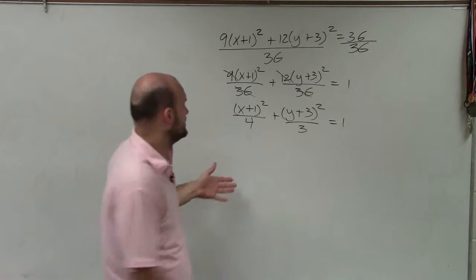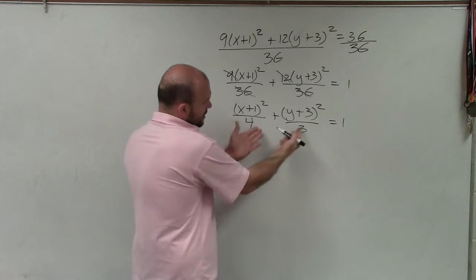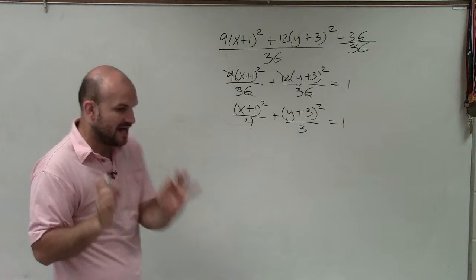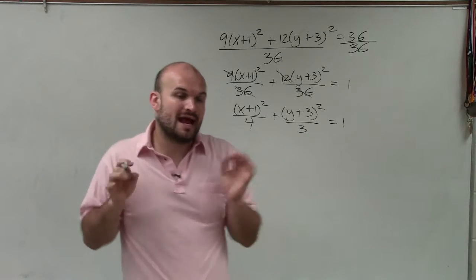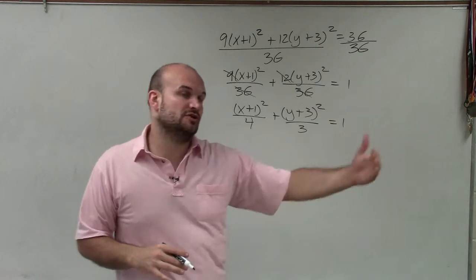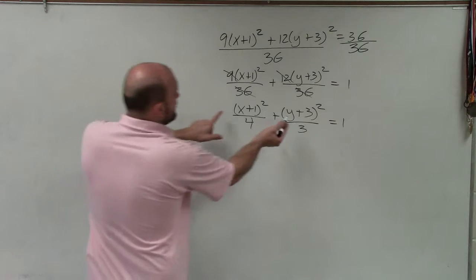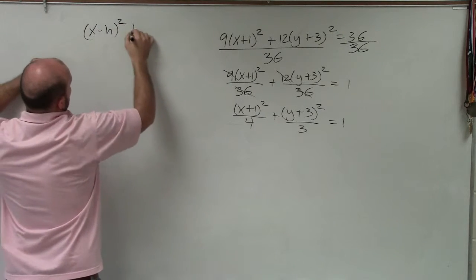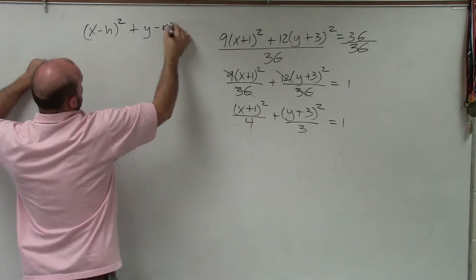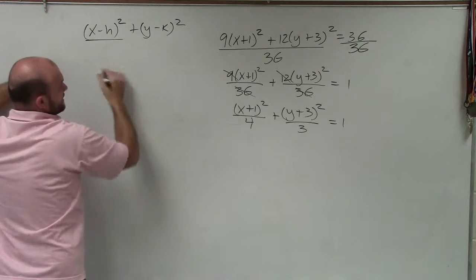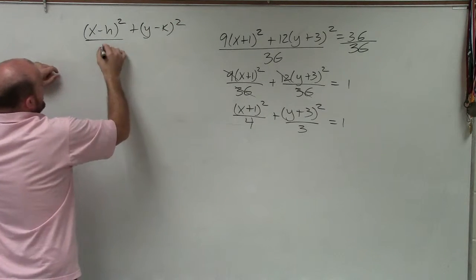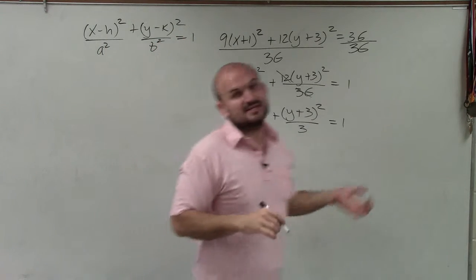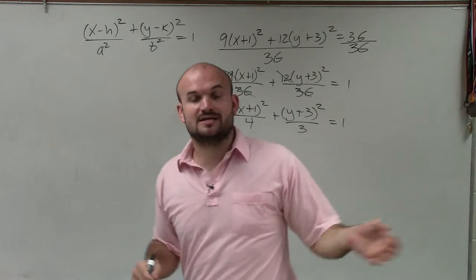So now we can determine that the larger number of our denominators is under the x². And that is going to be your value of a², where a represents the distance from the center to your vertices. So let's write the standard equation that we have, which is (x-h)²/a² + (y-k)²/b². And in this case, we have the larger number, which would be a² under the x and b² under y. Now remember, b represents the distance from your center to your co-vertex.